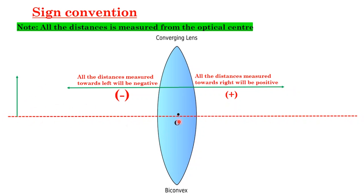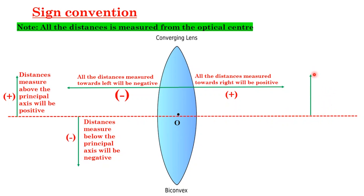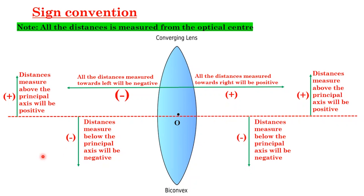The principal axis divides the plane into two parts: above and below. If we are measuring distances above the principal axis, it will always be positive — whether it is on the left side or right side. If we are measuring distances below the principal axis, it will be negative. This is the sign convention we will follow in our numericals.